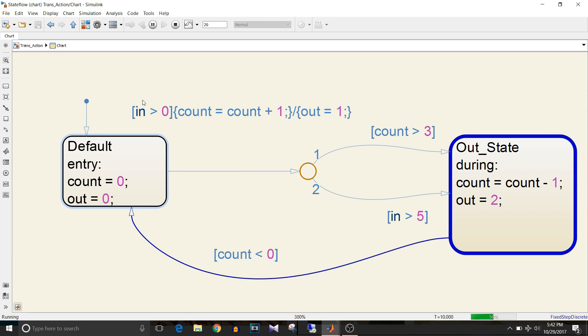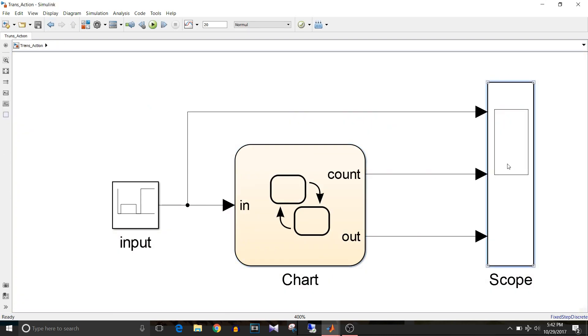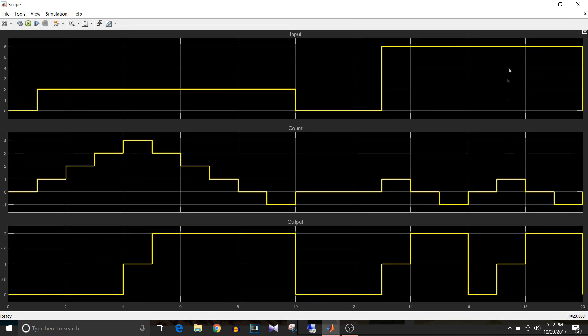You can see the execution animation how it occurs. Double-click on the scope and you can see here the input, count, and output of the simulation for this model.